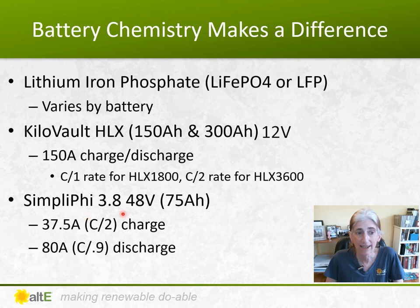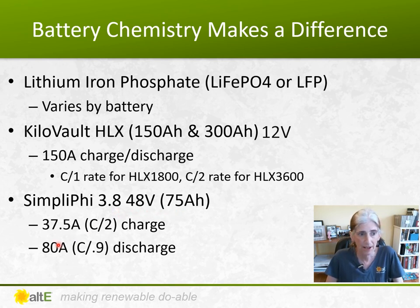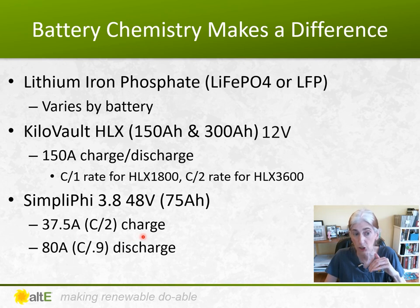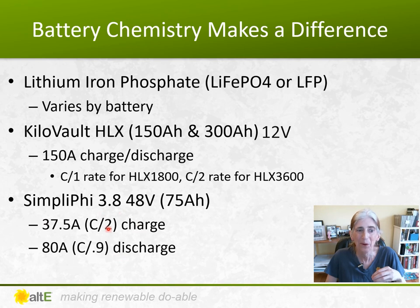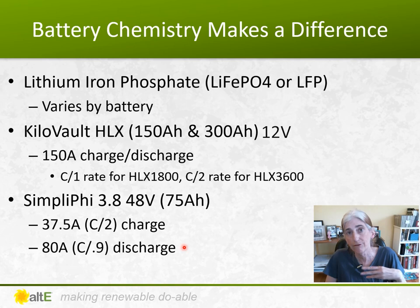Looking at Simplify's 48-volt, 3.8 kilowatt hour battery — 75 amp hours — it has a recommended 37.5 amp charge rate, which is a C2 charge rate, but an 80 amp or C0.9 discharge rate. So even within the same battery model, the recommended charge and discharge rates differ. When doing your designs, you really want to check the manufacturer specs for their recommendations.